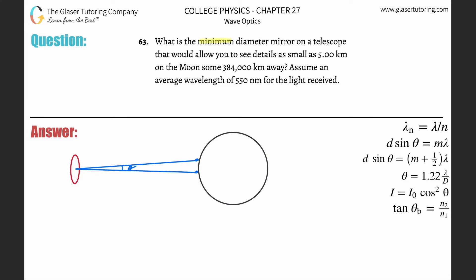Number 63: What is the minimum diameter mirror on a telescope that would allow you to see details as small as 5 kilometers on the moon, some 384,000 kilometers away? Assume an average wavelength of 550 nanometers.